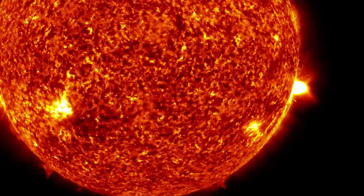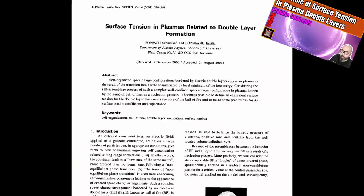Plasma can form distinct surfaces that can have an equivalence to surface tension. A while ago I covered an experiment and paper published by Popescu which showed the self-organized charge configuration bordered by electric double layers and showed the surface tension in plasma related to these double layer formations.